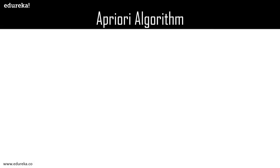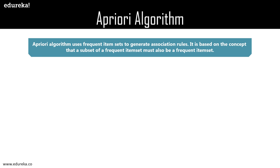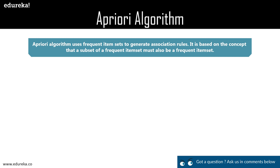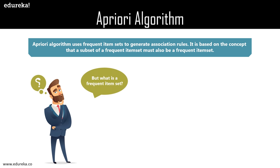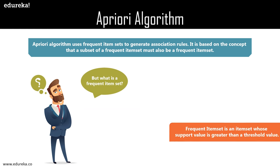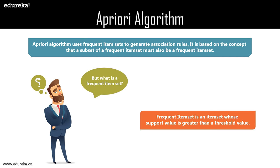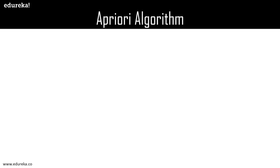The Apriori algorithm uses frequent item sets to generate association rules. It is based on the concept that a subset of a frequent item set must also be a frequent item set itself. A frequent item set is an item set whose support value is greater than the threshold value. For example, if {A, B} is a frequent item set, then A and B should also be frequent item sets individually.